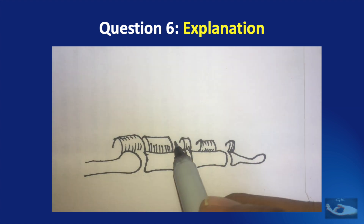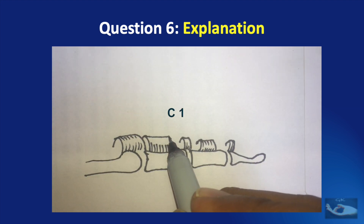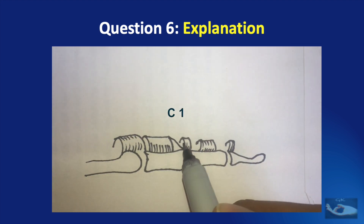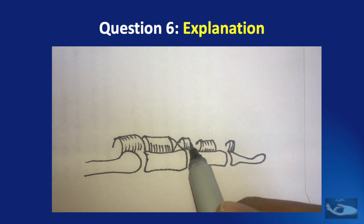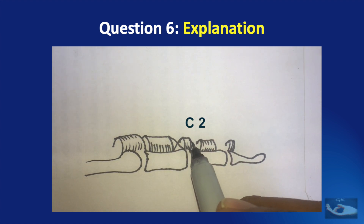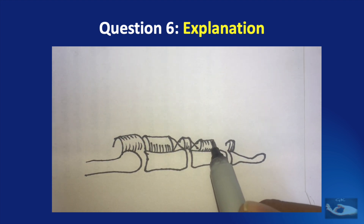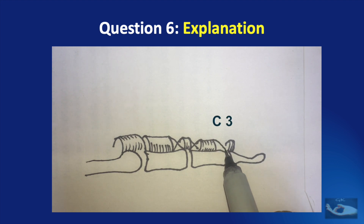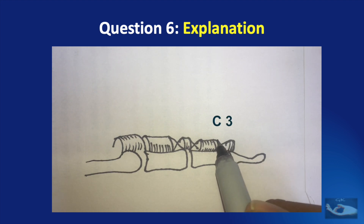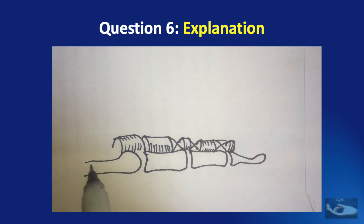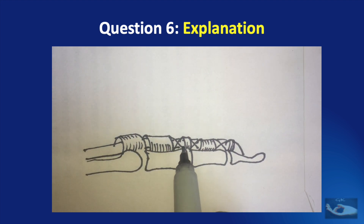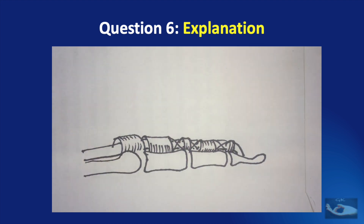Over the distal interphalangeal joint and base of the terminal phalanx is the A5 pulley. The first cruciform pulley is between A2 and A3. The second cruciform pulley is between A3 and A4. And the third cruciform pulley is between A4 and A5. That is the position of the flexor tendons within this sheath.